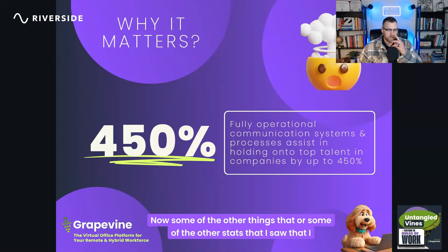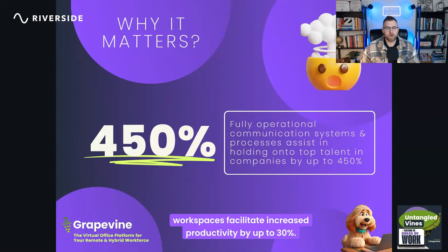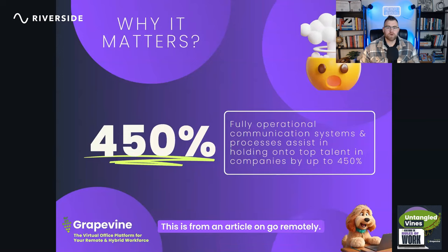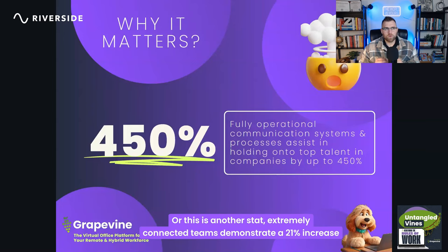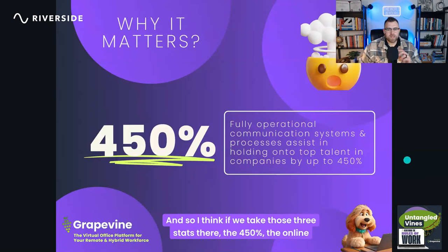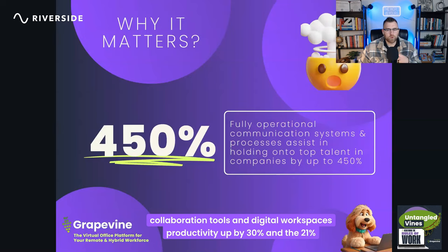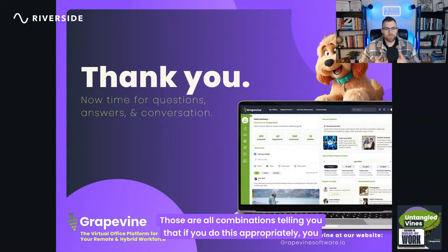Why does this matter? Fully operational communication systems and processes assist in retaining top talent by up to 450%. That's proof that delivering clarity, being transparent, and moving intentionally gives you the foundation for a fully operational system. Additionally, online collaboration tools and digital workspaces facilitate increased productivity by up to 30%, and extremely connected teams demonstrate a 21% increase in profitability. Those three stats together tell you that if you do this appropriately, you will have a more engaged remote workforce.